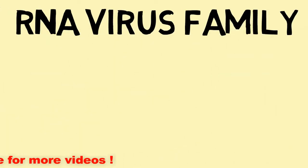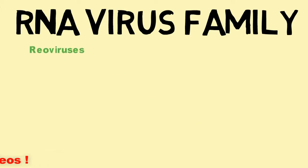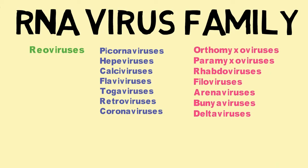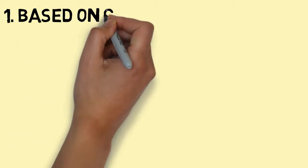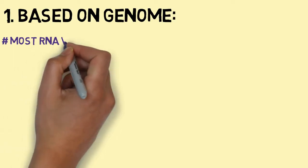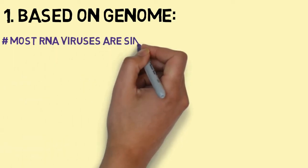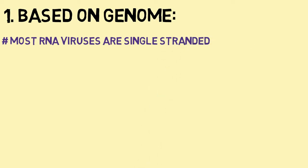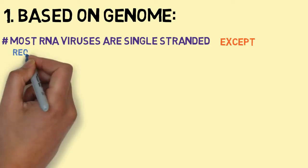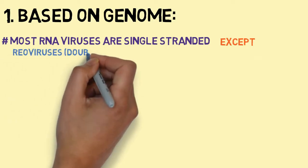Now let's move to the RNA virus family. The RNA virus family comprises of the following viruses as shown on the screen. Based on the genome, most RNA viruses are single-stranded, except Reoviruses, which are double-stranded.